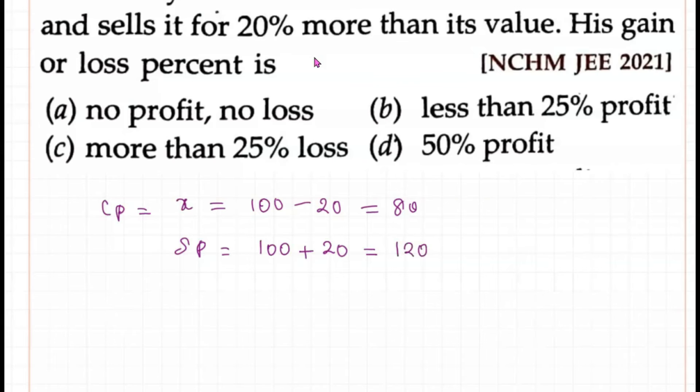So for percentage increase or decrease, the formula is: final value minus initial value divided by the initial value times 100.